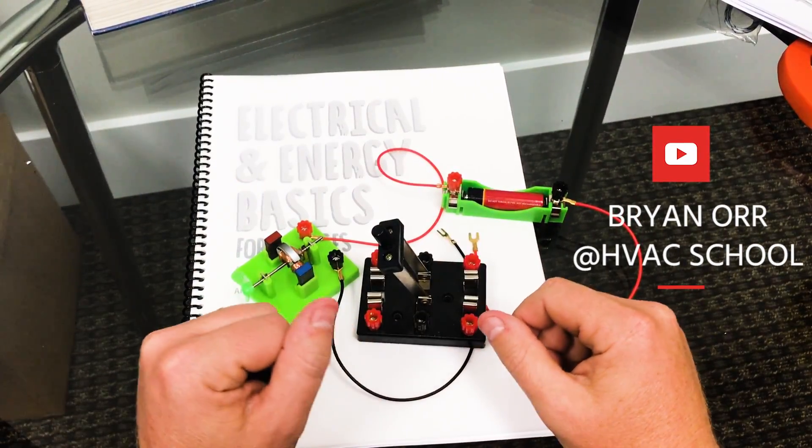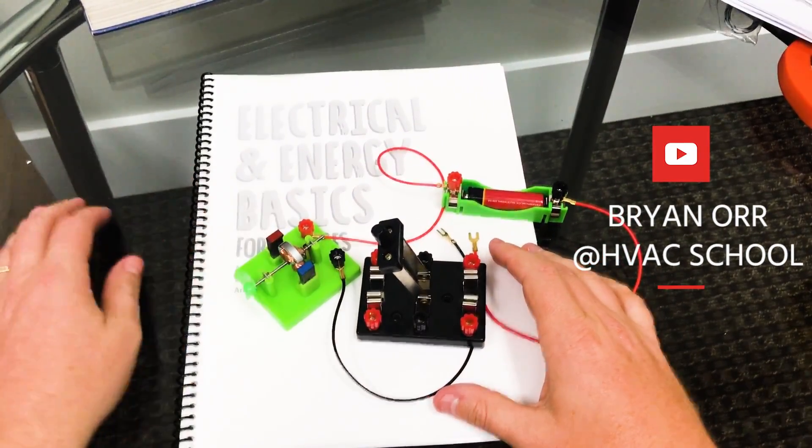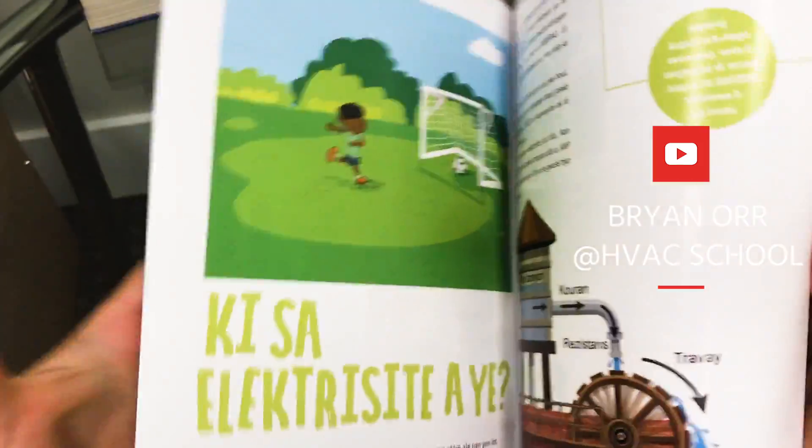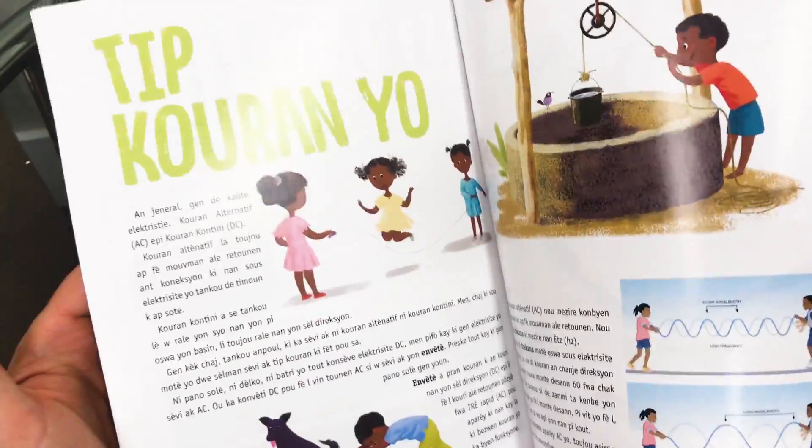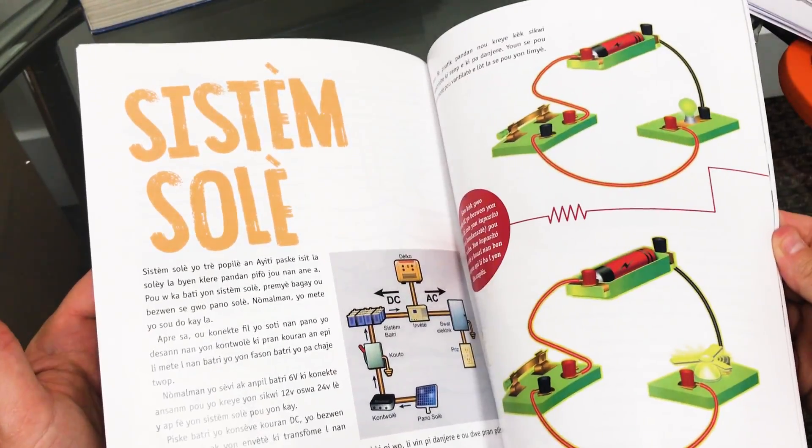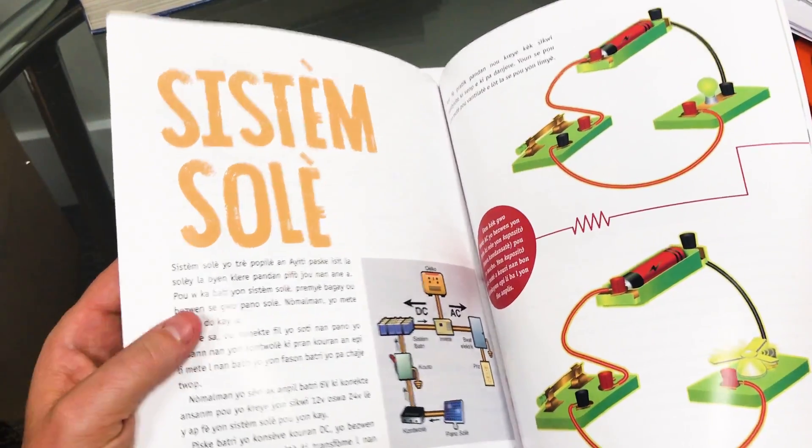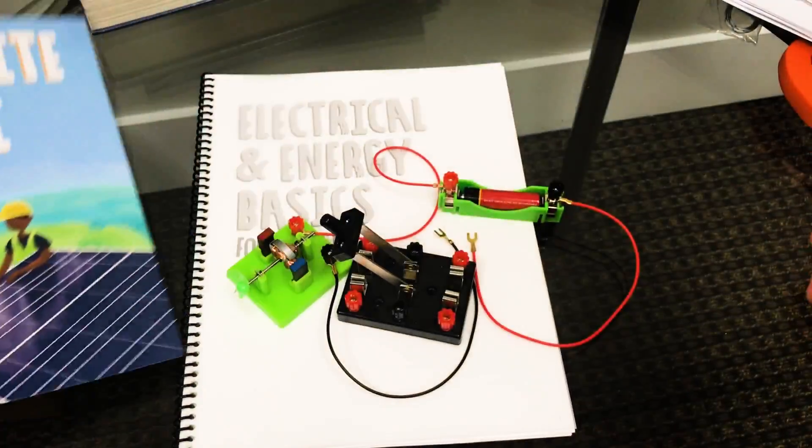All right, so I'm headed to Haiti to teach out of this book. This is the book in Haitian, and it's all about electrical basics for young adults to teach them some basic electrical knowledge so that way they can hopefully prepare to go out and get good careers and help their country out.